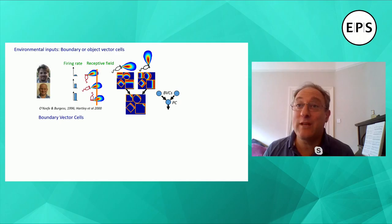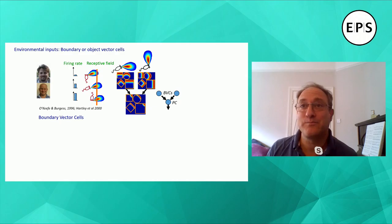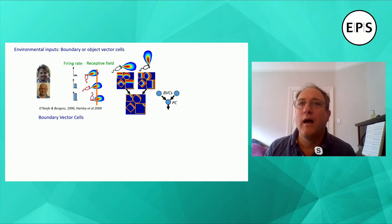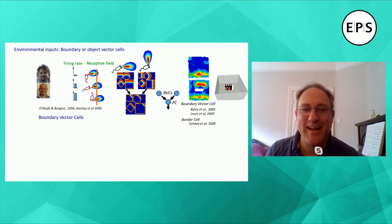More recently, the Mosers have shown object vector cells in entorhinal cortex, similar to boundary vector cells. These object vector cells fire whenever there's a small object at a certain allocentric distance and direction away from the animal — to the east in the first example, to the south or southeast in the middle one, and to the northwest in the third example.